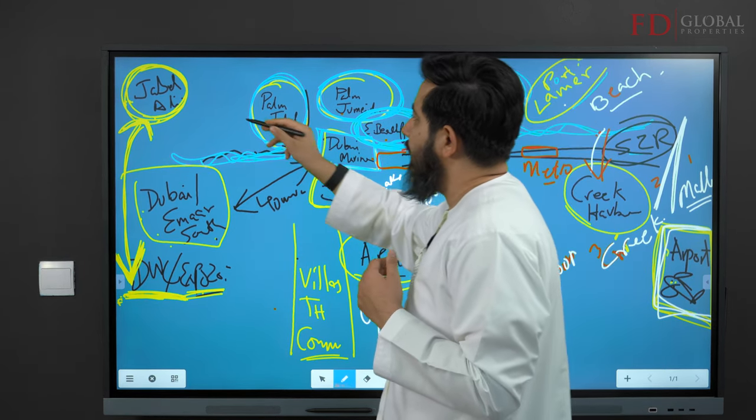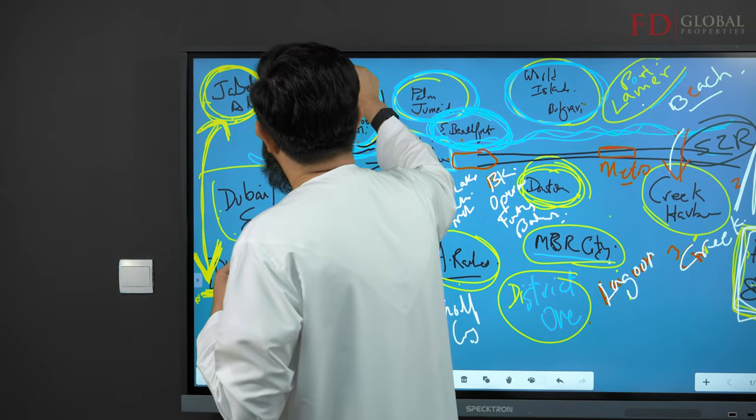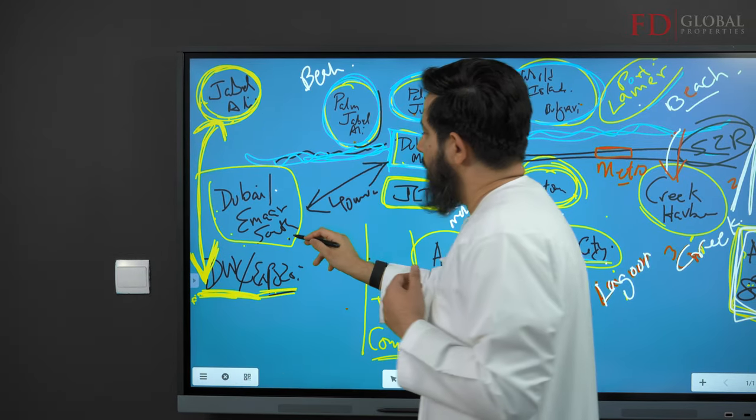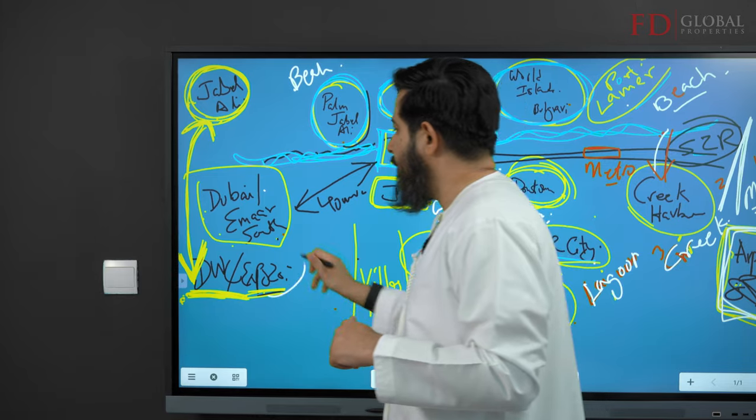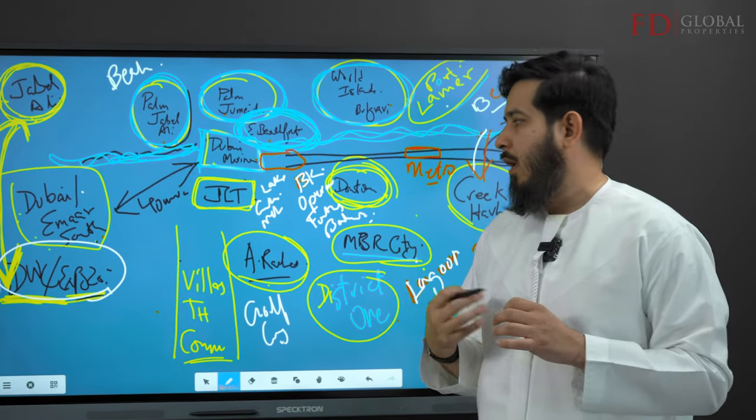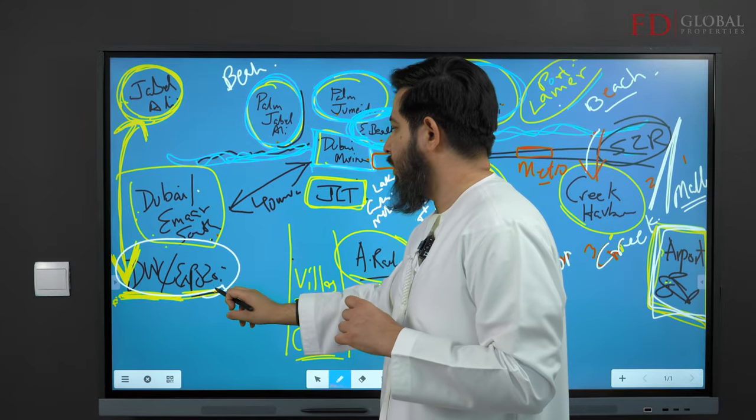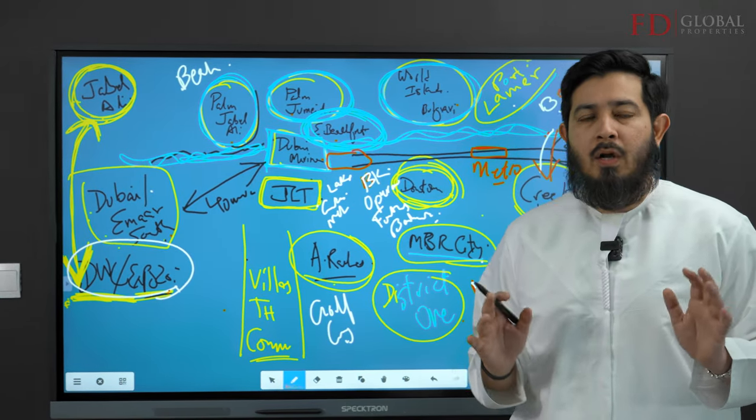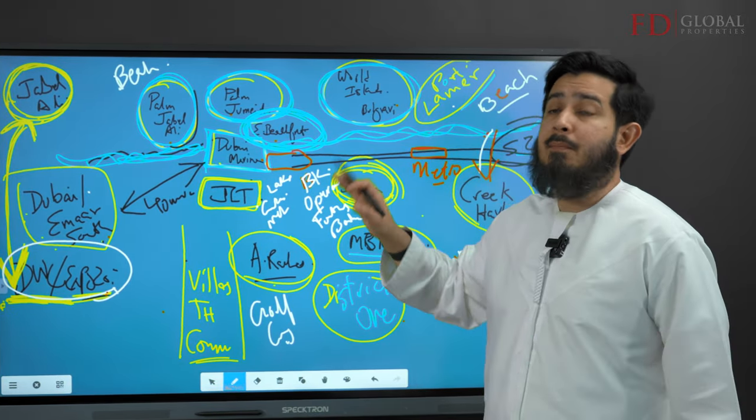So you can see this metro station actually connects over here. Dubai Marina, Emaar Beachfront, Palm Jumeirah, Palm Jebel Ali obviously has beach access. Dubai Emaar South is undervalued land, very close to Dubai World Central, which is the largest aerotropolis in the world, and Expo 2020.